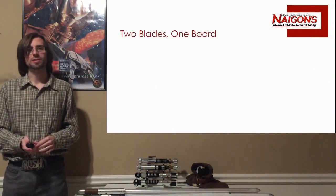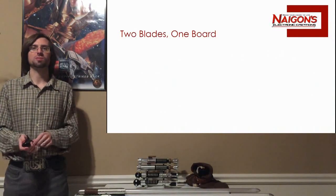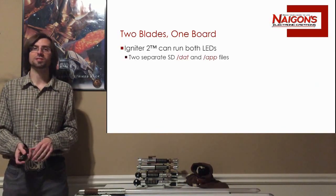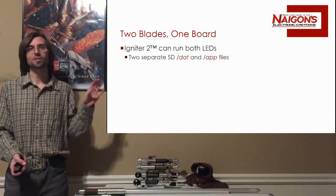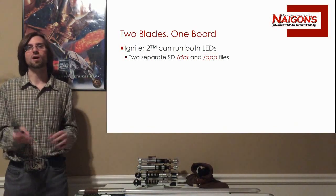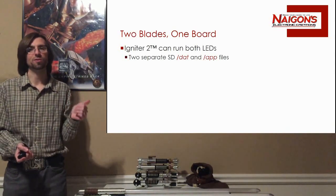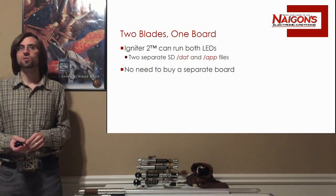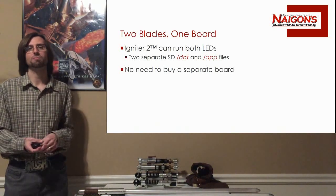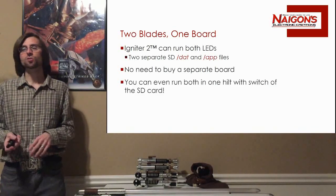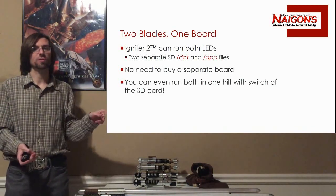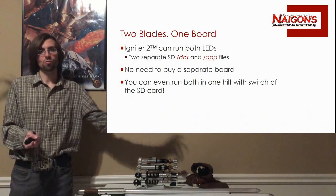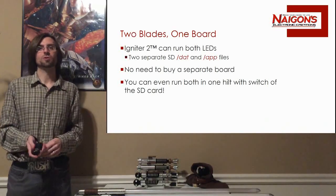Two blades in one board. Up until now, all boards that supported string blades were separate boards you'd have to buy separately and plan for in advance. Igniter 2 doesn't have that problem — you can run both a NeoPixel string blade or a normal LED off the exact same board. You just have two different SD cards: one with the DAT files for the string, one for the normal LEDs. You don't have to plan ahead; you could even make a saber with connectors for both, and by swapping the card and connector your saber could do both.